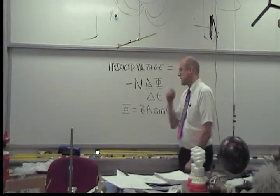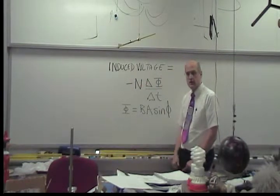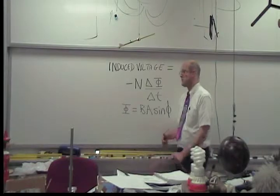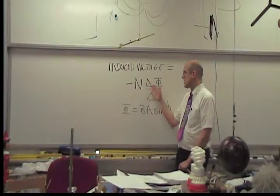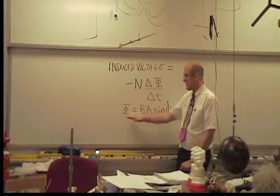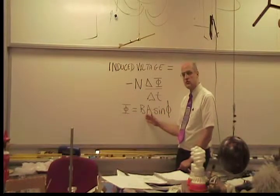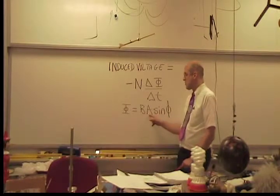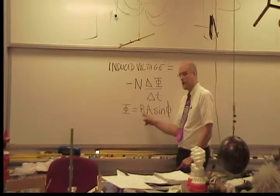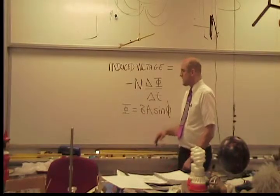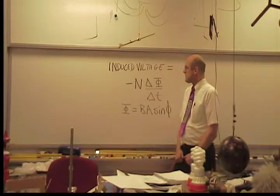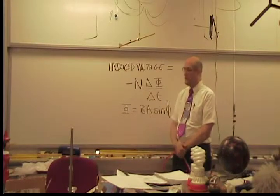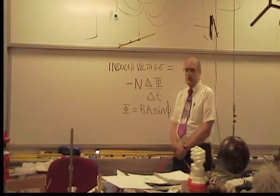So we just took a look at how a voltage can be induced. Faraday's Law says that an induced voltage is equal to the negative of N (the number of turns — this would be one turn) multiplied by the change in the magnetic flux per change in time, where magnetic flux equals the magnitude of the magnetic field strength times the magnitude of the area vector times the cosine of phi, where phi is the angle between the direction of the area vector and the direction of the magnetic field. Now let's talk about what we mean by the negative sign.